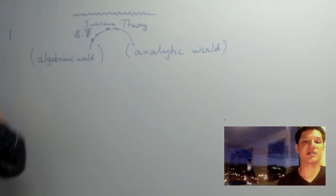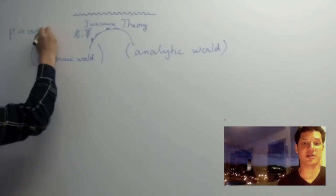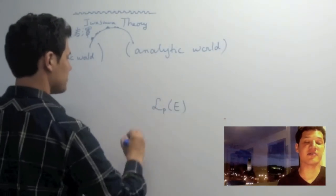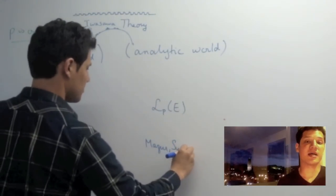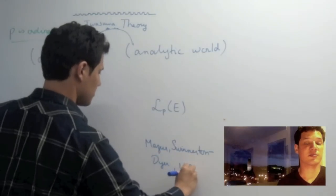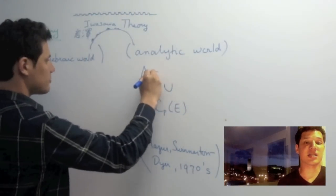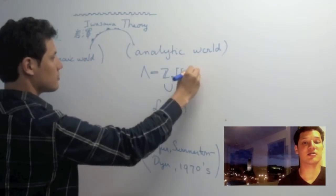So what does basically Iwasawa theory look like when P is ordinary? While on the analytic side, we have a p-adic L function, which is due to Mazur and Swinnerton-Dyer. It's work from the 1970s. It turns out to live in the Iwasawa algebra lambda, thanks to the theorem of Wiles.